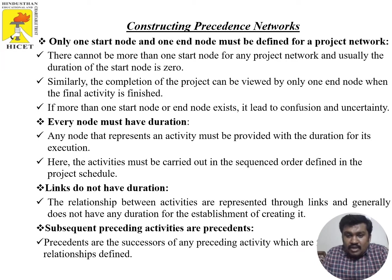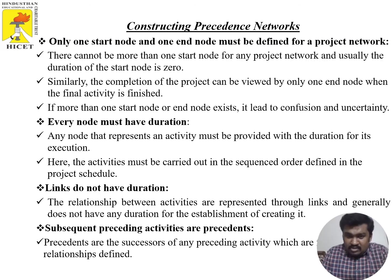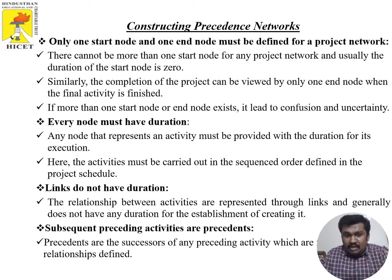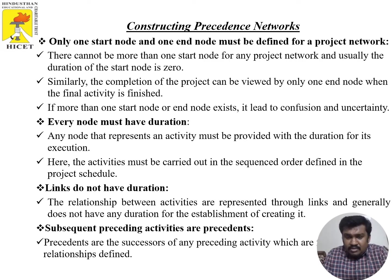To construct precedence networks, certain steps must be followed. First, only one start node and only one end node must be defined for a project network — there cannot be more than one start node. Usually the duration of the start node is zero. If more than one start or end node exists, it leads to confusion and uncertainty.